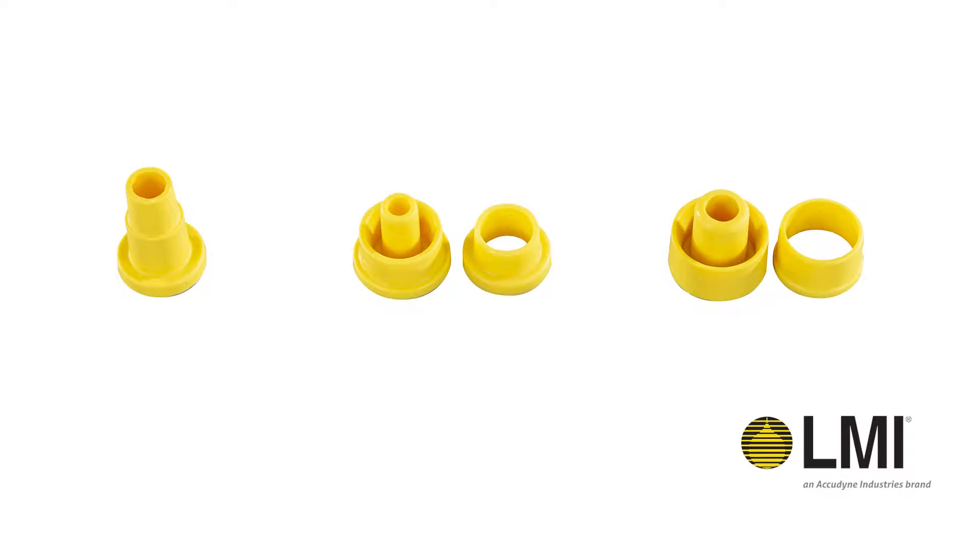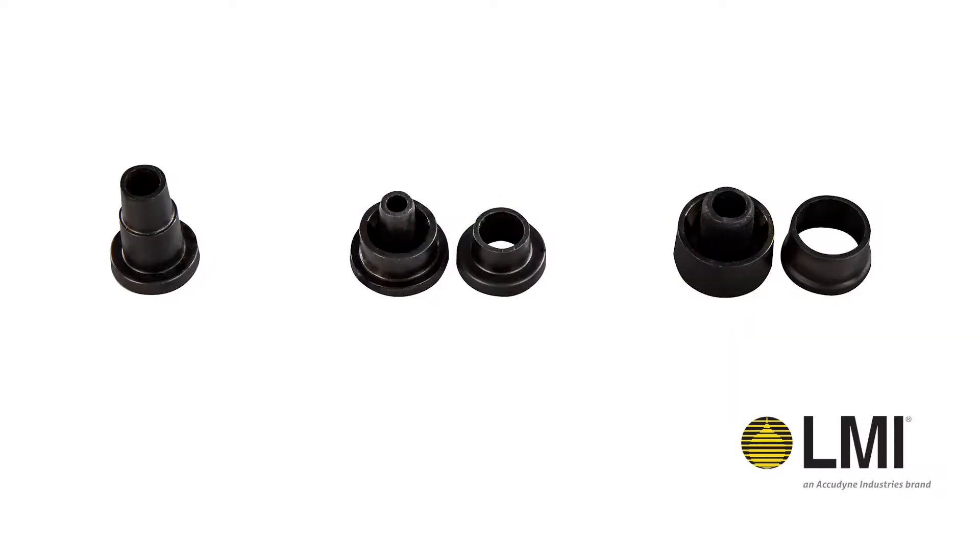A set of yellow ferrules accommodate ¼ inch, ¾ inch, and ½ inch outer diameter tubing. An equivalent set of black ferrules accommodate metric sizes for 6mm, 8mm, and 12mm outer diameter tubing.